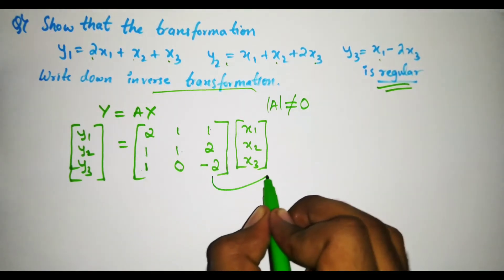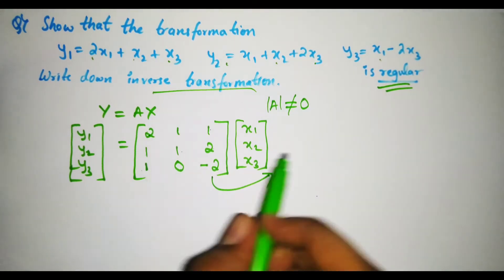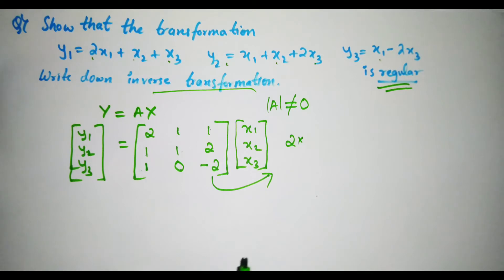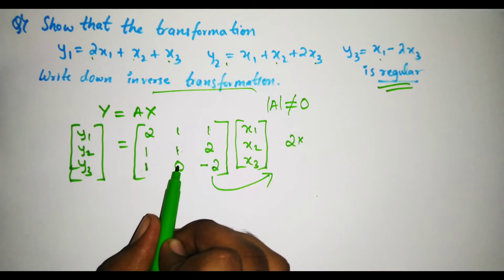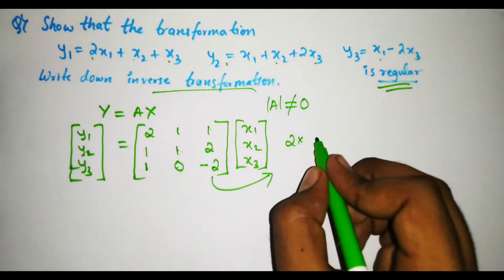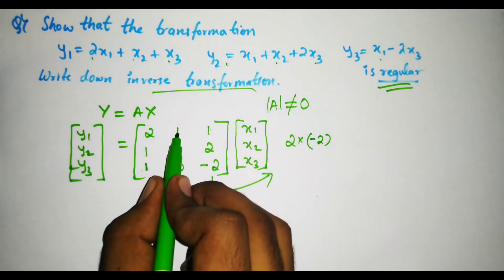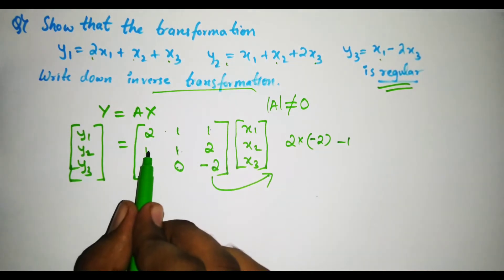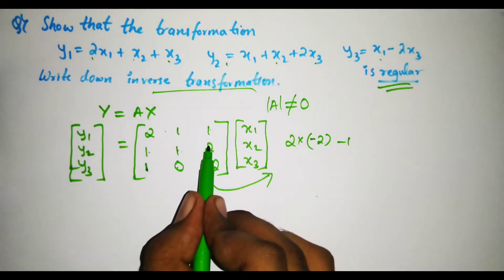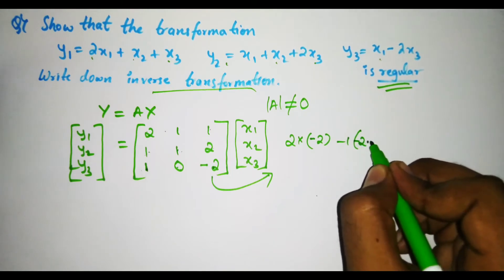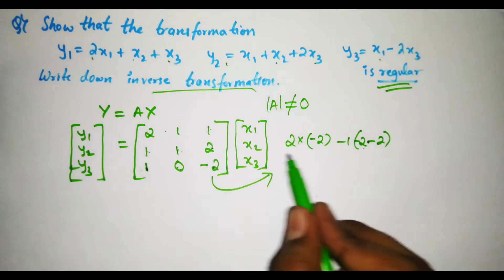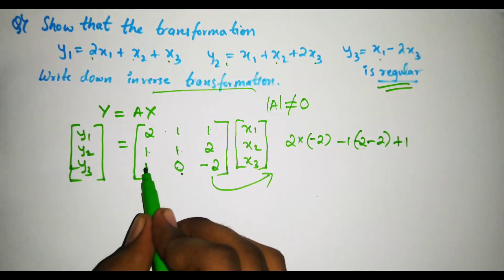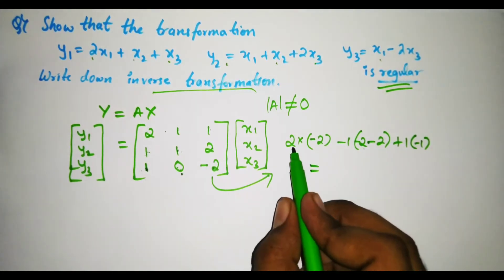We will find the determinant of this matrix. For the first element 2, leave that row and column — you get 1 times minus 2 minus 0 times 2, which is 1 times minus 2 = minus 2. For the next element 1, take minus 1, leave that row and column — you get 1 times minus 2 minus 1 times 2, giving minus 1 times (minus 2 minus 2). For the last element plus 1, leave that column and row — you get 1 times 0 minus 1 times 1 = minus 1.